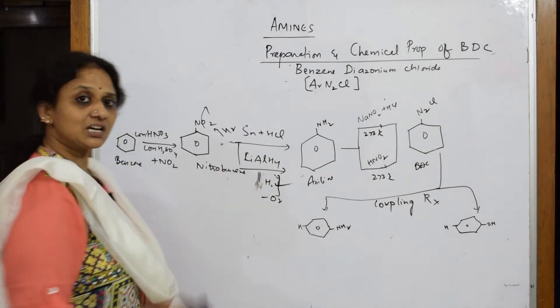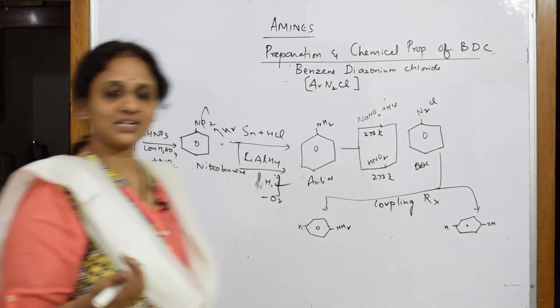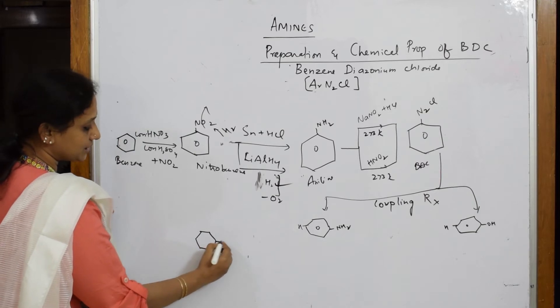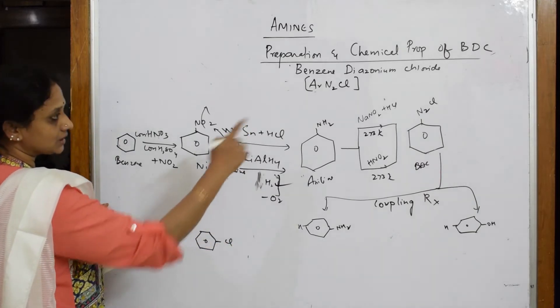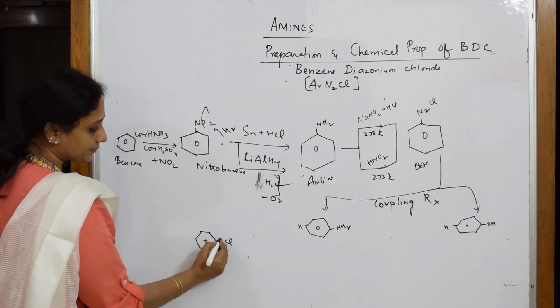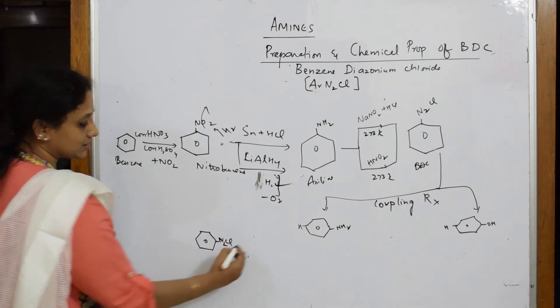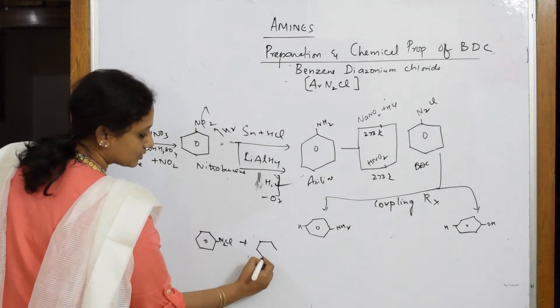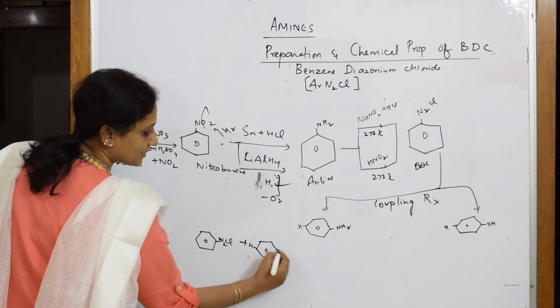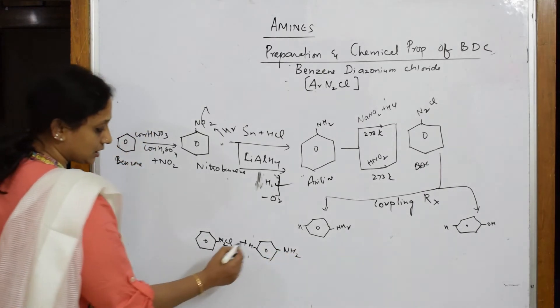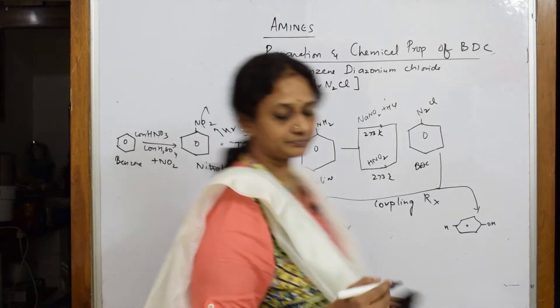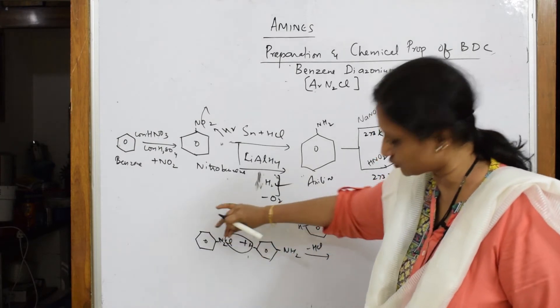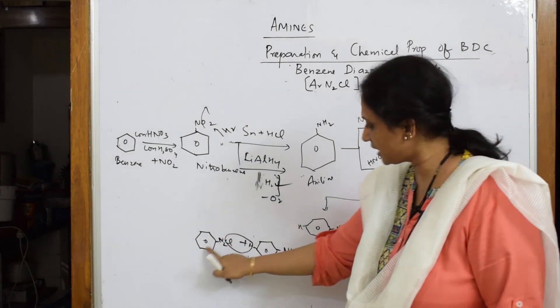I am taking BDC, N2Cl, plus aniline with hydrogen towards this side. That's why I took hydrogen on that side and NH2 on this side. HCl is out, minus HCl. Both are going to couple together and form one product. Now take this ring here.